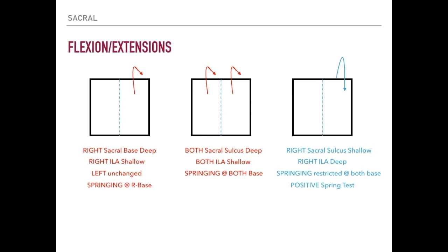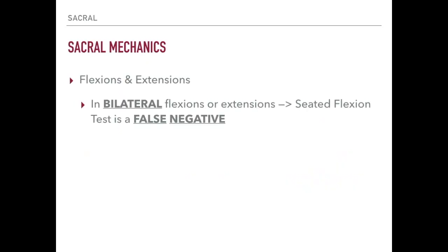Flexions and extensions are a little lower yield than torsions but do show up, so be comfortable working through them. Importantly, in a bilateral flexion or extension, the seated flexion test is a false negative. The seated flexion test localizes to one side with dysfunction, but when both sides are equally flexed or extended, you can't appreciate a difference between the right and left sides of the sacrum. Even though there's somatic dysfunction, both sides are moving together, so you get a false negative seated flexion test despite bilateral dysfunction.